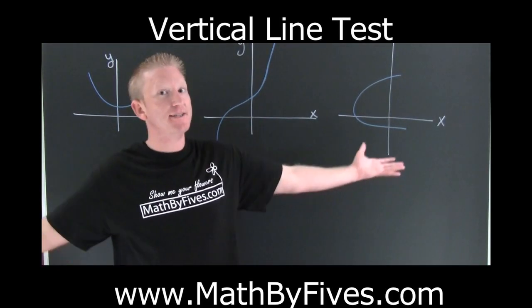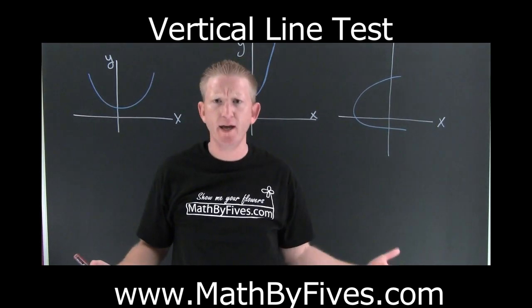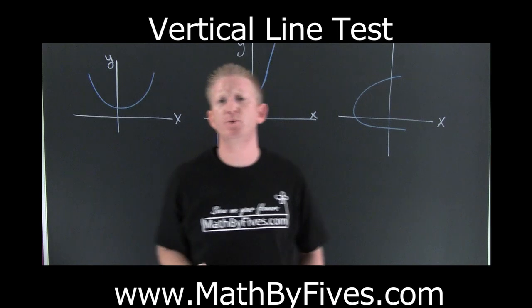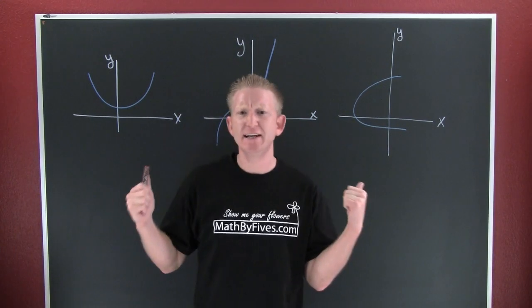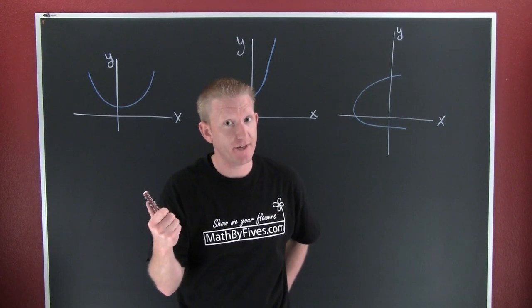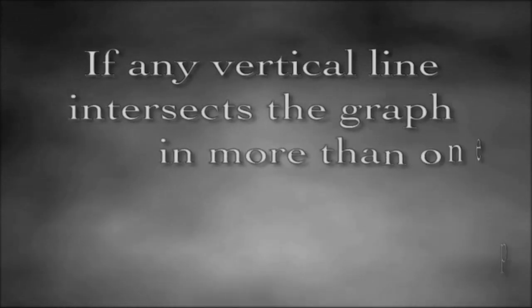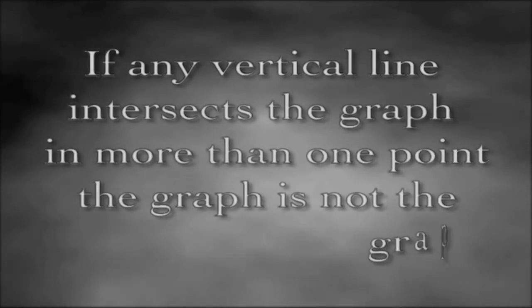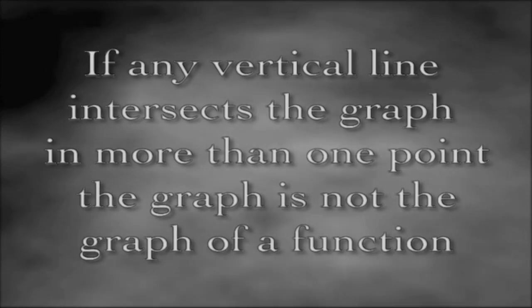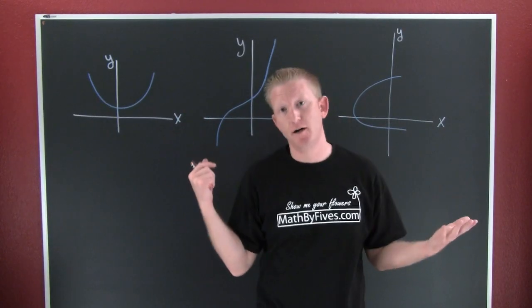Okay, pictorially we want to try to decide whether or not these guys are functions. And the way we're gonna decide whether or not these three back here are functions is by the vertical line test. So we need a definition: the vertical line test. If any vertical line intersects the graph in more than one point, the graph is not a graph of a function.